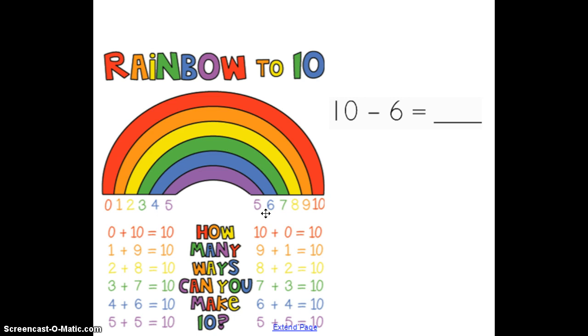And of course we have the flip facts as well where we can go backwards and do 10 plus 0 equals 10, and so on. We are going to use these addition facts, these rainbow to 10 facts, to help us solve our subtraction sentences when 10 is the whole.